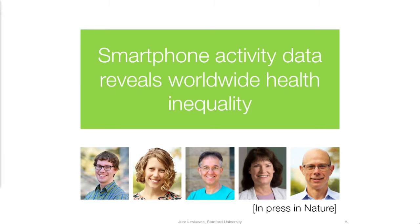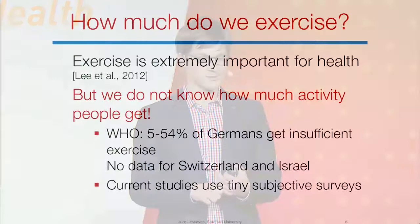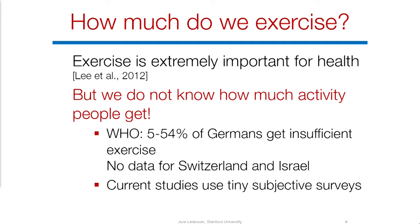The question becomes: how do we use this type of data to obtain valid, strong, peer-reviewed results? I'm here to talk about a particular paper currently in press, where together with my collaborators we use smartphone activity data to understand how physical activity and obesity are related. For example, the WHO says that in Germany between 5% and 45–54% of the population get insufficient exercise, yet we have no data about Switzerland and Israel — highly developed, important countries.